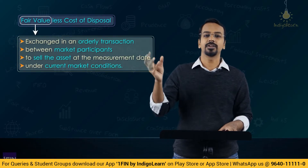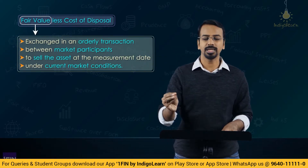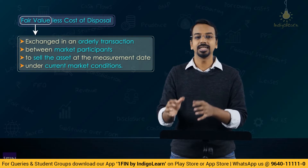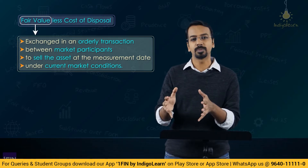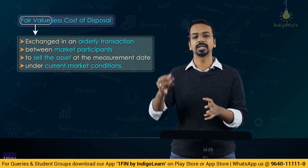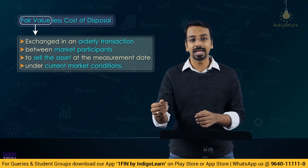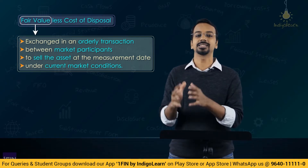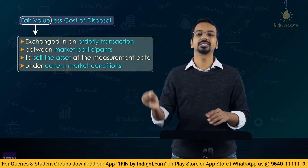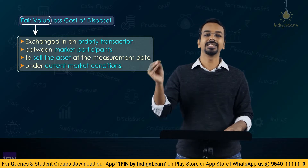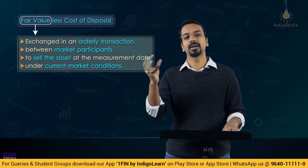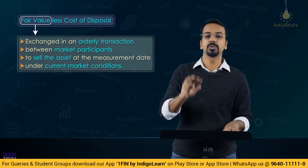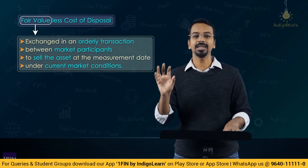Let's now understand fair value less cost of disposal. Fair value is the fair value as defined in Ind AS 113. It is basically an orderly transaction between knowledgeable parties acting without any compulsion — the amount that you pay to settle a liability or the amount that you get when you sell an asset. We will understand this in detail in Ind AS 113, how to compute and what factors go into it.